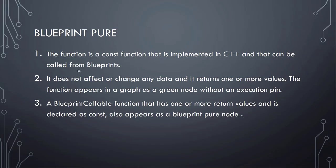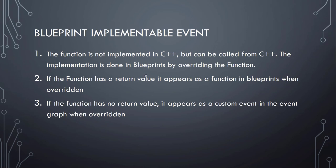Now we covered BlueprintCallable and BlueprintPure - both called from Blueprints. But what if you want a function implemented in Blueprints that you can call from C++? That's BlueprintImplementableEvent. This function is not implemented in C++ but can be called from C++. The implementation is done by overriding the function in the event graph. If the function has a return value and you override it, it appears as a function in Blueprints. If it has no return value, it appears as a custom event node - the red one.